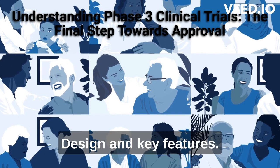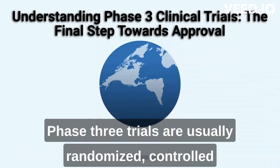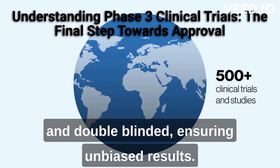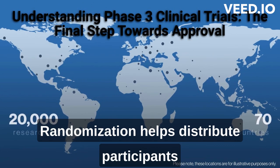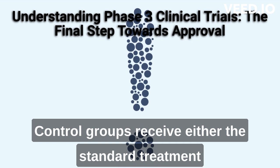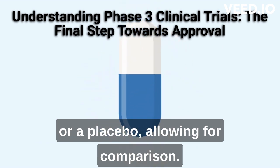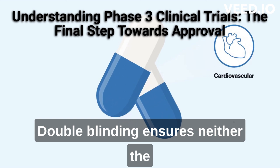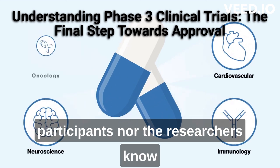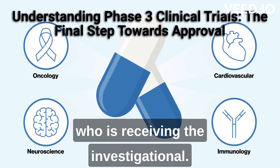Design and key features. Phase 3 trials are usually randomized, controlled, and double-blinded, ensuring unbiased results. Randomization helps distribute participants evenly across treatment groups. Control groups receive either the standard treatment or a placebo, allowing for comparison. Double-blinding ensures neither the participants nor the researchers know who is receiving the investigational drug.